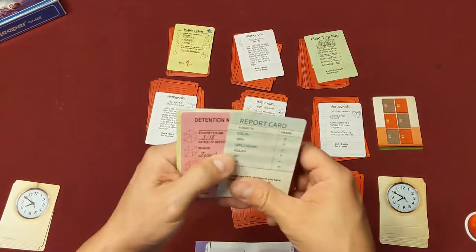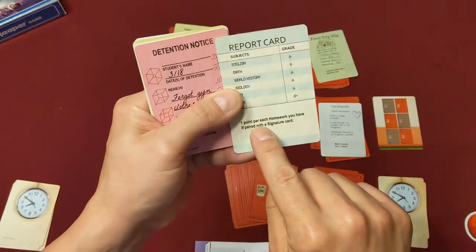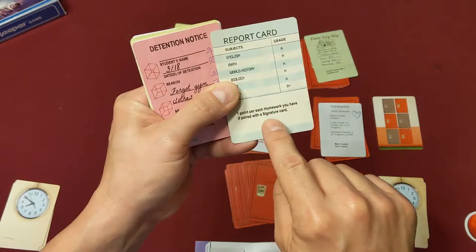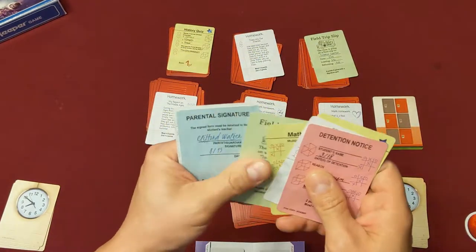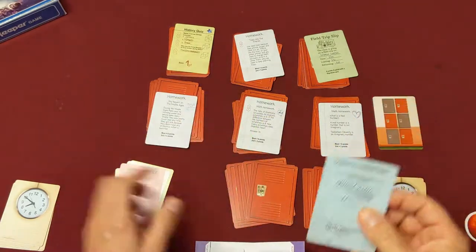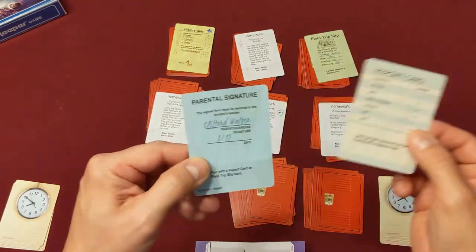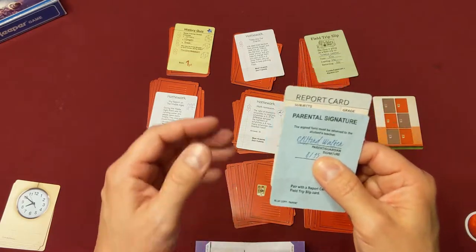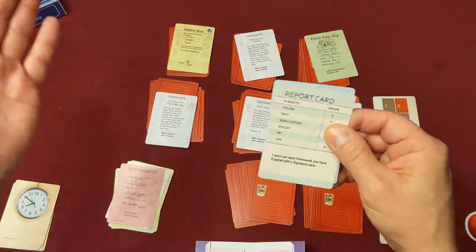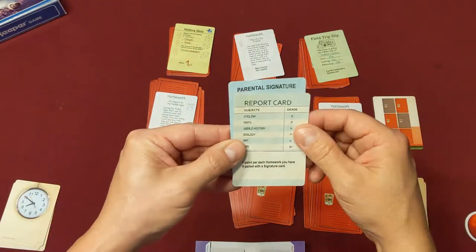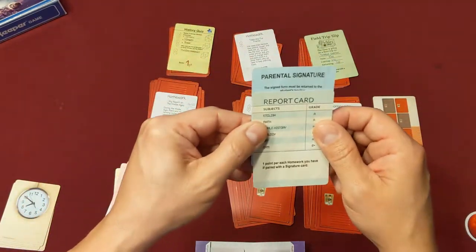So basically you've got a report card, and it says one point for each homework you have but only if it's paired with a signature card. So let me pull up a signature card here: parental signature. Of course, you've got to get your parents to sign your report card. So if you have it signed, you pair these together and now you'll get one point for each homework you have. So if you've collected six homework cards in the game, that'd be six points for you, but only if your parents signed your report card.